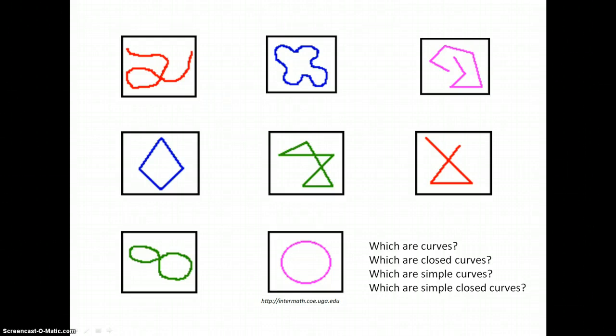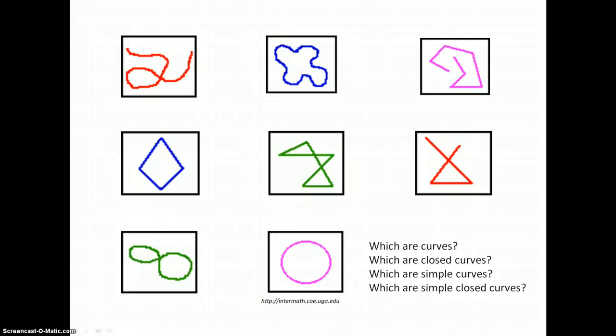Here are eight geometric curves. Are there any that aren't curves? Check to make sure they're connected. Which of these are closed curves? Which of them are simple curves? And which of them are simple closed curves?